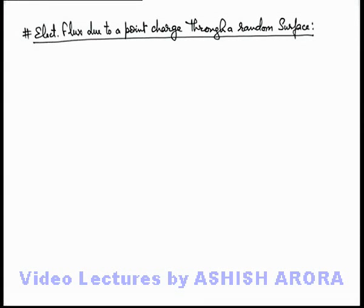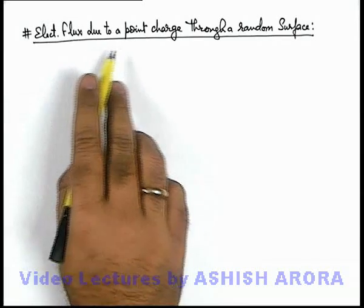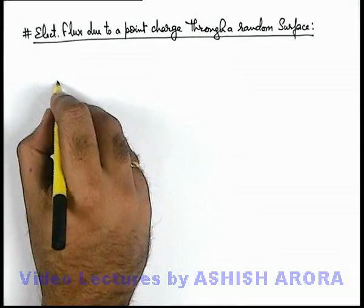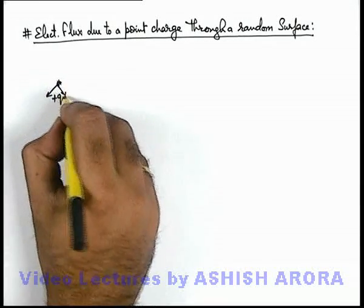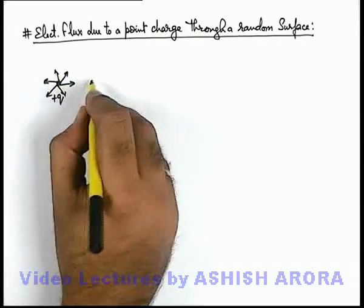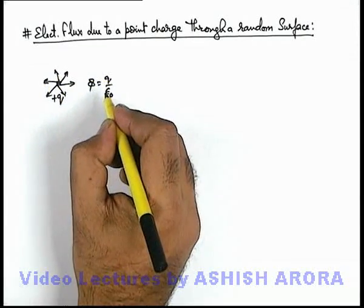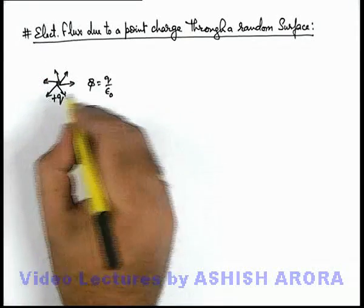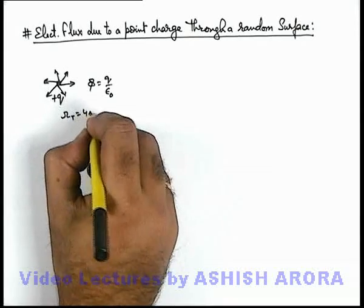Let's discuss one more concept related to calculation of electric flux due to a point charge through a random surface. We know well that if there is a point charge plus q, it originates a total of q by epsilon-not electric flux in all of its surroundings uniformly, or we can say in a total solid angle of 4π steradians.